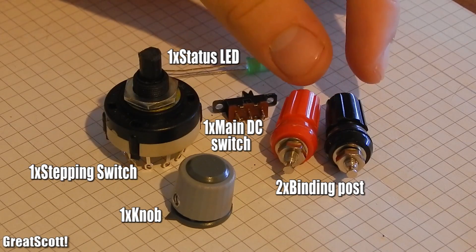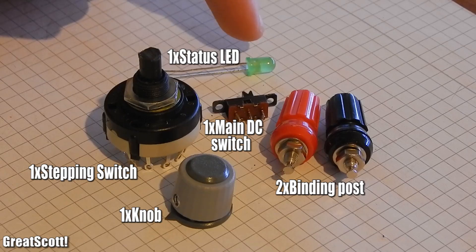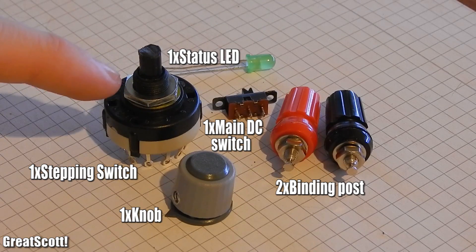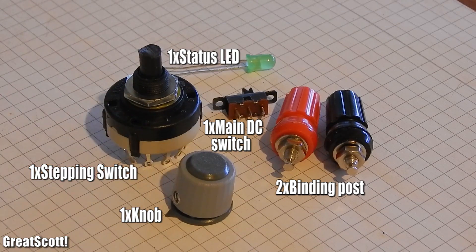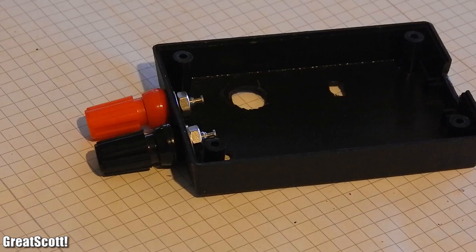I also used two binding posts, one small main DC switch, one green status LED, one stepping switch and a knob for this switch.